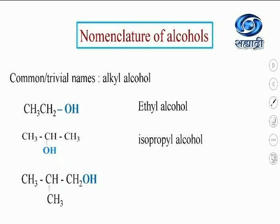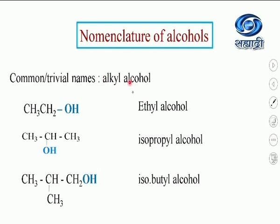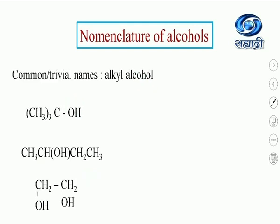For a compound with four carbons total, if the carbon bearing OH is primary and there is a methyl group on the second carbon, it is called isobutyl alcohol — which is primary. Then there is tertiary butyl alcohol, where the carbon bearing the functional group is attached to three carbons — four carbon atoms total, so it is tertiary butyl alcohol. Another four-carbon compound where OH is on the secondary carbon is called secondary butyl alcohol.